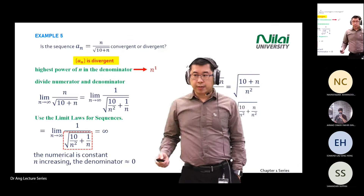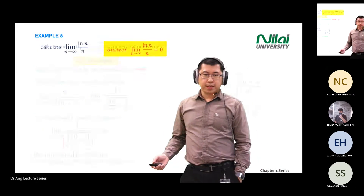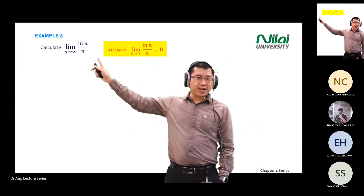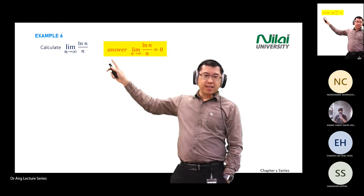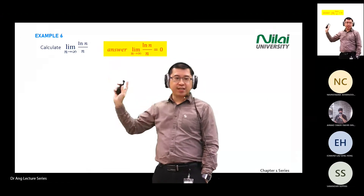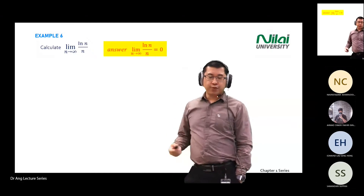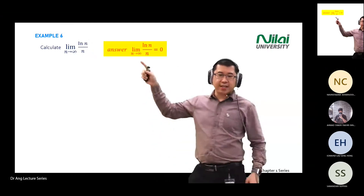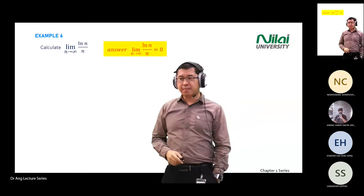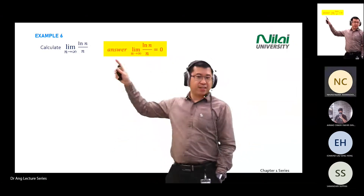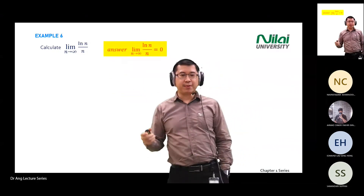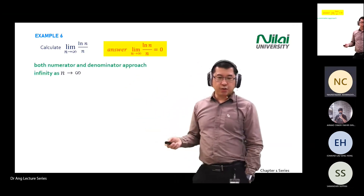Okay, now we look at the next example. If the question asks you to evaluate ln(n) divided by n, the first step is to look at the denominator n — the bottom one. What is the highest power of n? It's one. So you're going to divide the whole equation, top and bottom, by n.